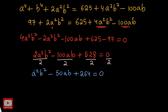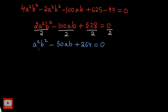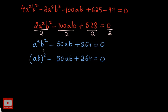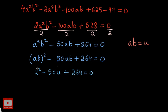This looks like a quadratic equation but has two variables. We can write it as (ab)² minus 50ab plus 264 equal to 0. To reduce to one variable, we substitute ab equal to u. So the equation becomes u² minus 50u plus 264 equal to 0. We can solve this quadratic equation by factorization, completing the square, or the quadratic formula.